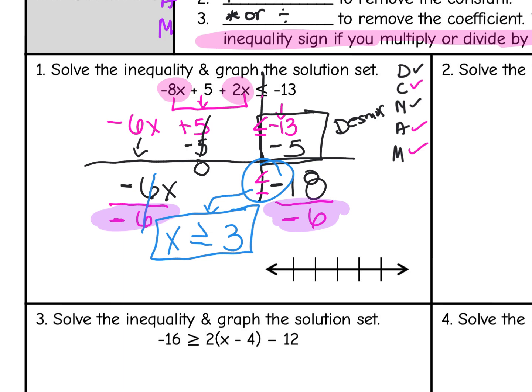Let's graph this solution set. I'll put 3 in the middle, with 2 going down the number line and 4 and 5 going up. Because 3 is included, I graph it with a closed circle. All solutions are to the right, so the arrow goes from 3 heading right.